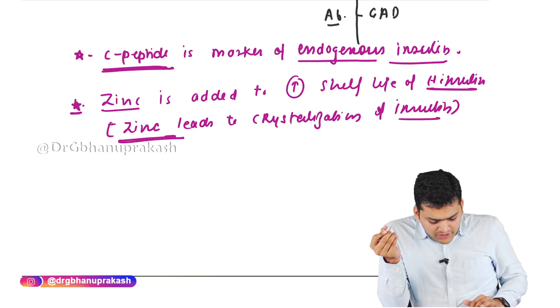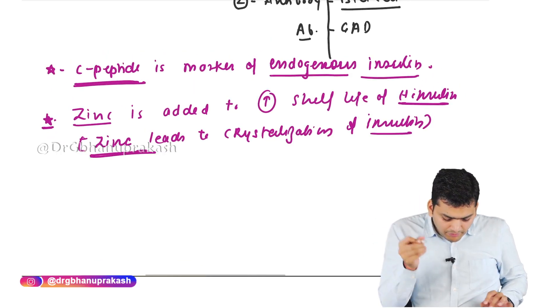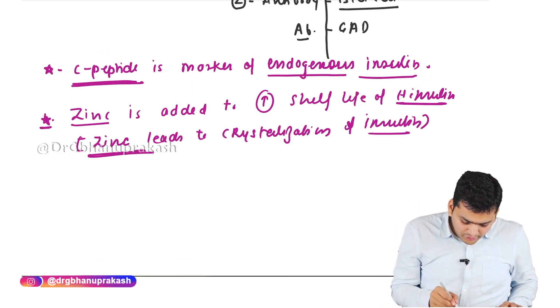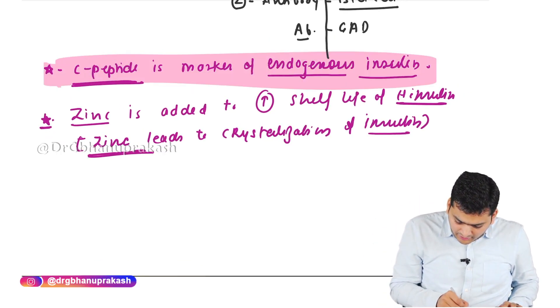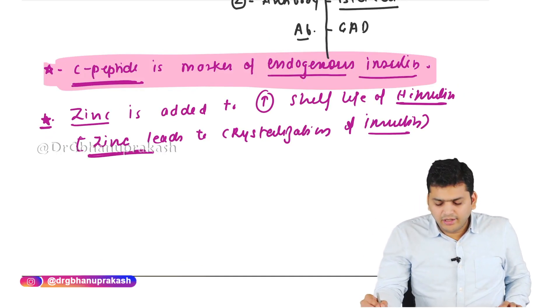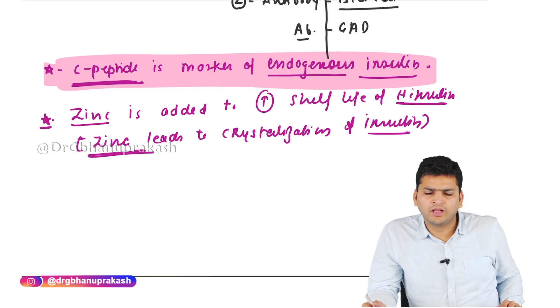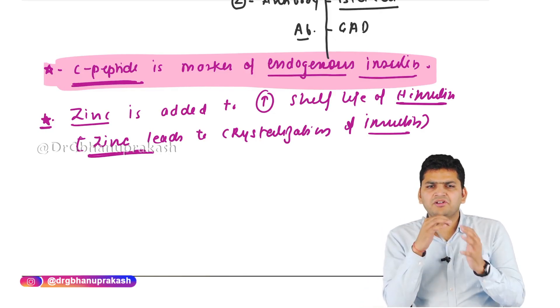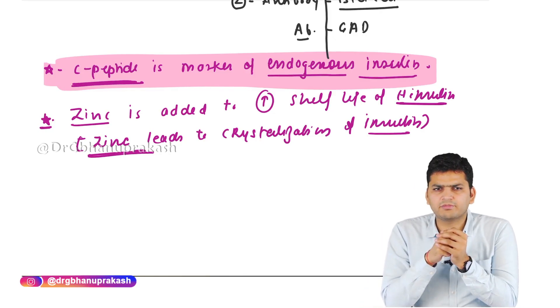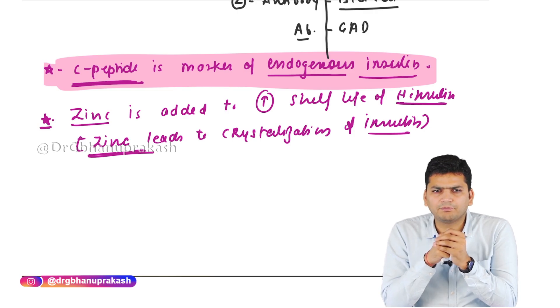These are the key points to remember: C-peptide is a marker of endogenous insulin. Zinc is added to insulin to increase its shelf life through crystallization. These are the important points regarding the insulin molecule.